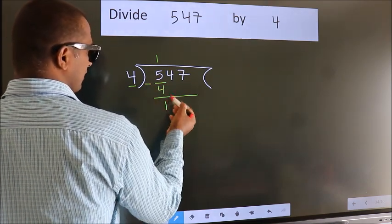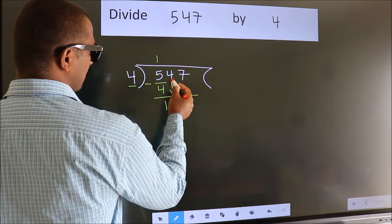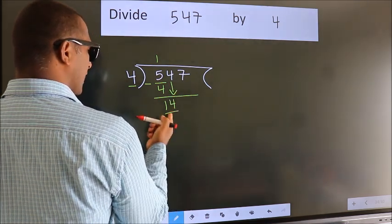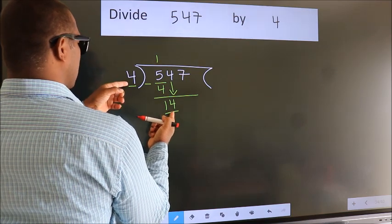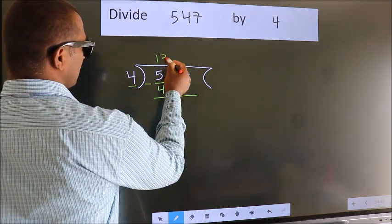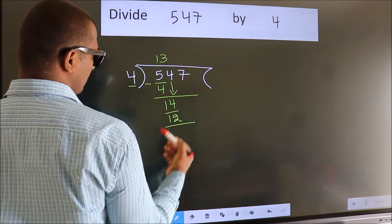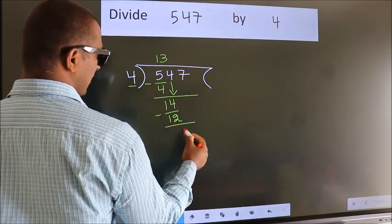After this, bring down the beside number. So, 4 down. So, 14. A number close to 14 in 4 table is 4 3s 12. Now, we subtract. We get 2.